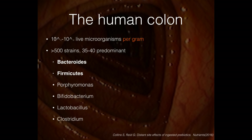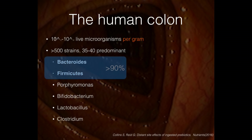The human colon has a lot of bacteria — even per gram, it contains 10 to the 11th power of live microorganisms per gram of colon. That's a one followed by 11 zeros. There are a lot of different species, but two of them are the predominant species in our gut: Bacteroides and Firmicutes. That's over 90% of all the species. These are the good bacteria that help keep us healthy and prevent disease.